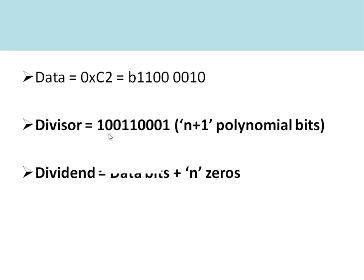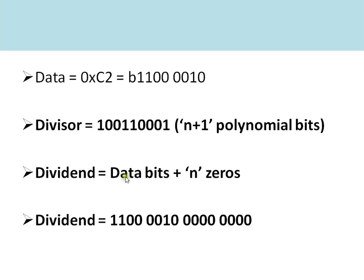The dividend — which we are going to divide — is the data bits with n zeros appended. For 8-bit CRC, 8 zeros need to be appended to the data being transmitted. So the dividend becomes C2 followed by these 8 zeros.